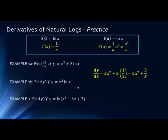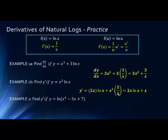In the next problem we have a product, so we use the product rule: derivative of the first times the second, plus the derivative of the second times the first. The derivative of x squared is 2x, times ln(x), plus the derivative of ln(x), which is 1 over x, times x squared. Since x squared over x equals x, we end up with 2x·ln(x) + x.